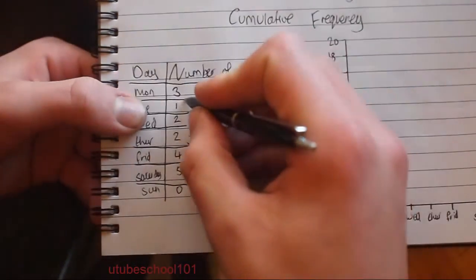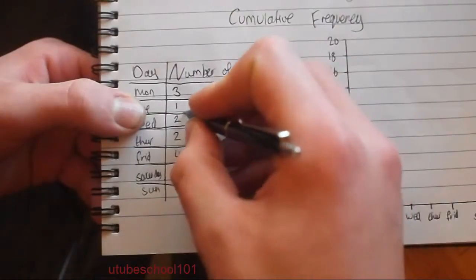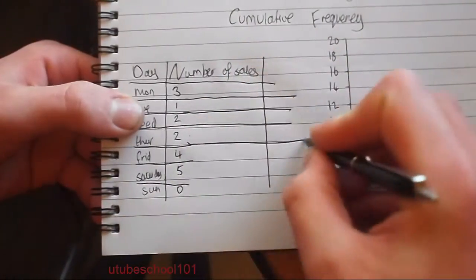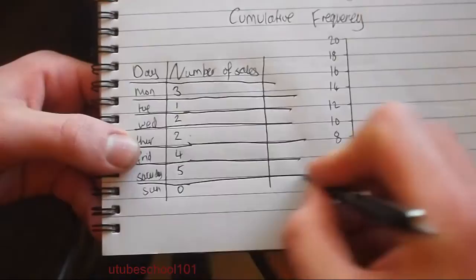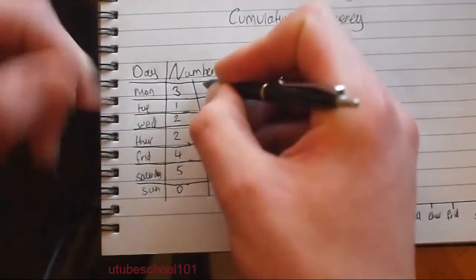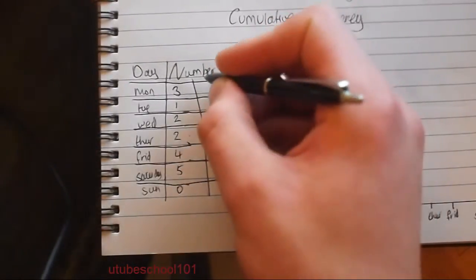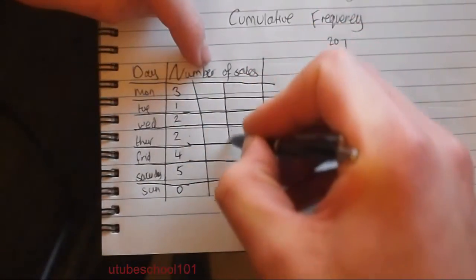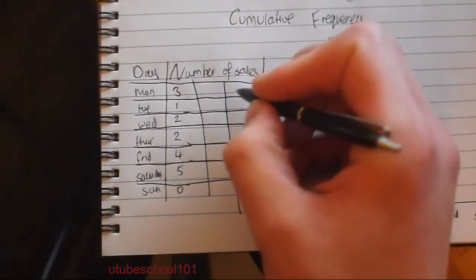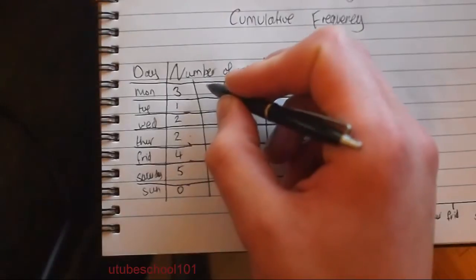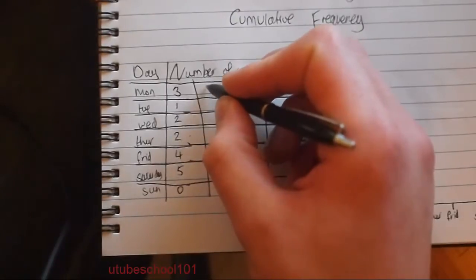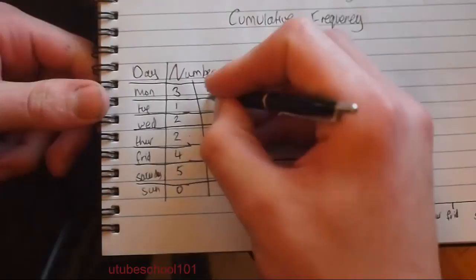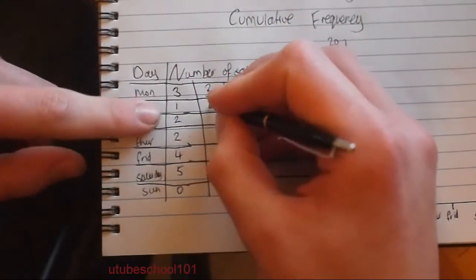Let's write some numbers down. This column here is going to be the Cumulative Frequency. What's 3 add 0? Well, that's 3. Now, what is 3 add 1? Well, that's 4.